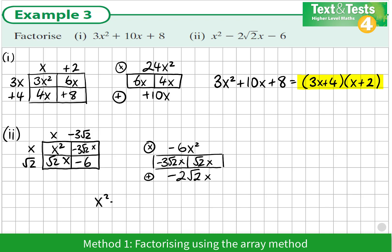So we could see the factors using the array method are (x - 3√2)(x + √2).